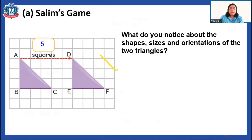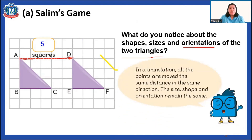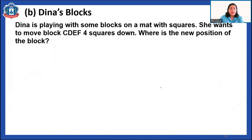What do you notice about the shape, size, and orientation of the two triangles? The shape of the triangle stays the same, the size stays the same, and the orientation or position also stays the same. Only the exact location on the grid changes. In translation, all the points are moved the same distance in the same direction, so the size, shape, and orientation never change — they remain the same.